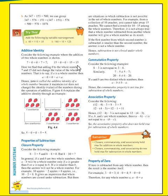Here we find that adding zero to the whole numbers seven and 15 did not change the value of those whole numbers. We are adding zero in each equation, and adding zero doesn't change the result — the result remains as it is.